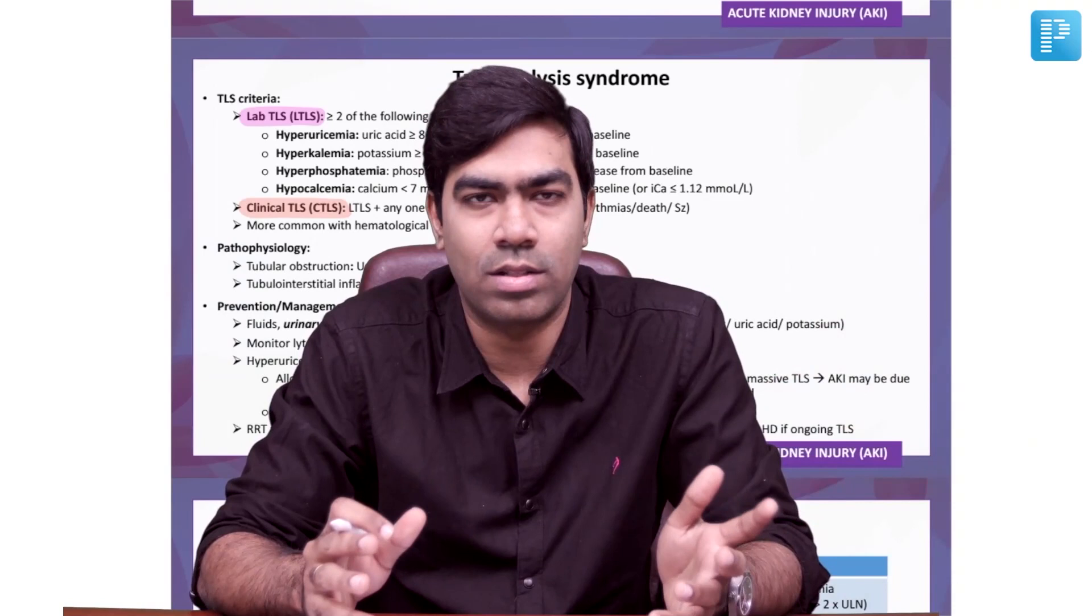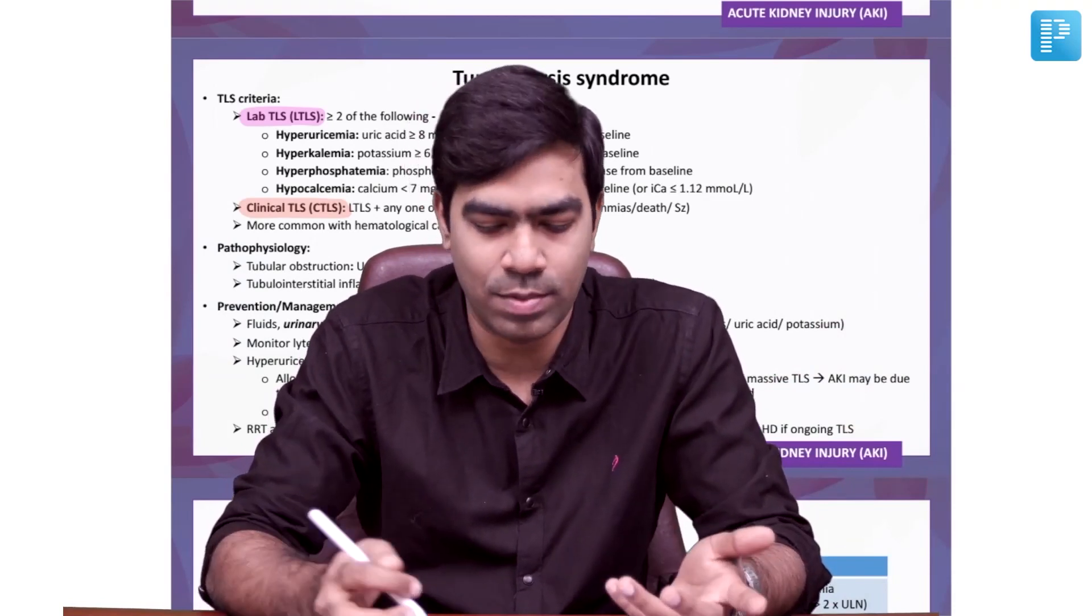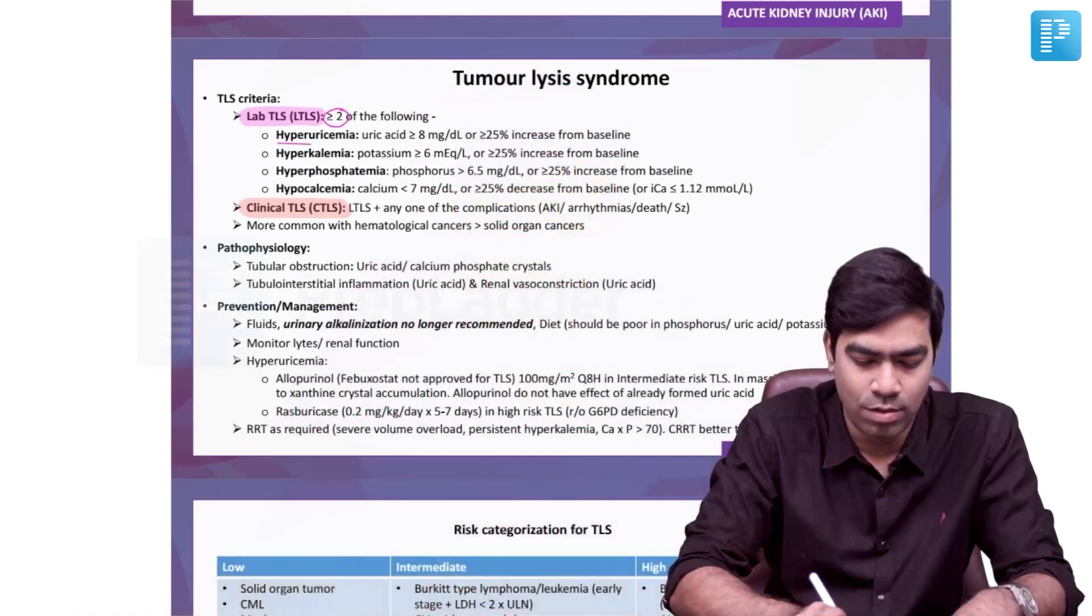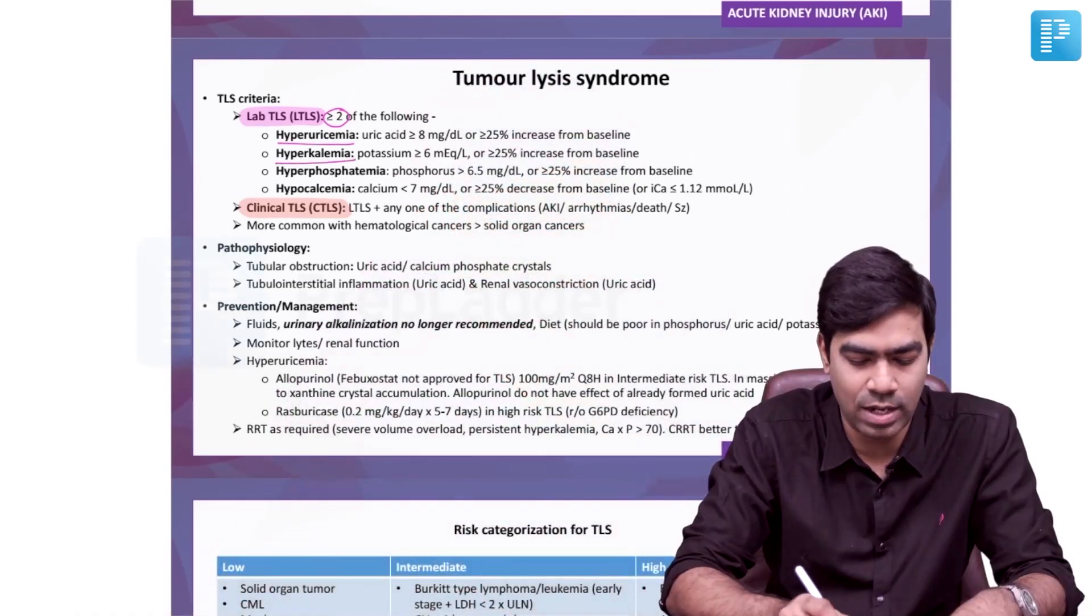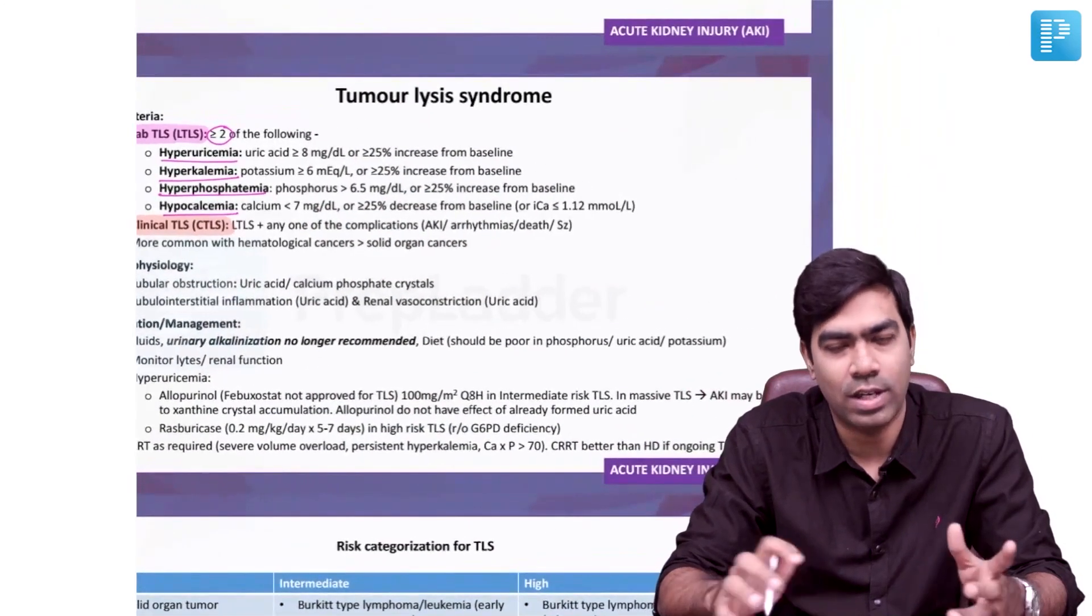Laboratory tumor lysis comprises four characteristic electrolyte disturbances, out of which if you have at least two, you can call it LTLS in the setting of a cancer known to produce tumor lysis. First, hyperuricemia. Second, hyperkalemia. Third, hyperphosphatemia. And fourth, hypocalcemia.